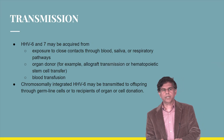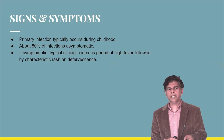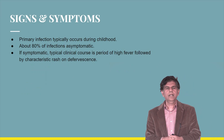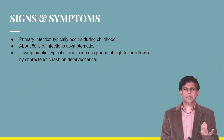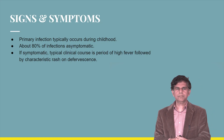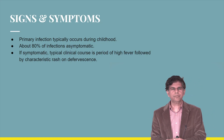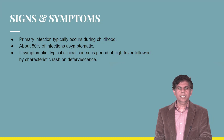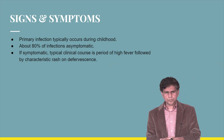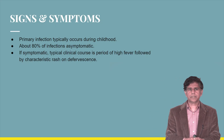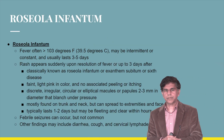Primary infection typically occurs before age 5, and about 80% of infections are asymptomatic. If symptomatic, the typical course is a period of high fever followed by a rash. In children, Roseola Infantum presents with fever greater than 103 degrees Fahrenheit, and then a rash suddenly appears after resolution of the fever — up to three days after.